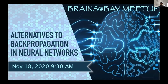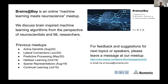Welcome everyone to another Brains at Bay. Today we'll be talking about alternatives to backpropagation in neural networks. Brains at Bay is an online machine learning meets neuroscience meetup where we discuss brain-inspired machine learning algorithms from the perspective of neuroscientists and machine learning researchers. We always try to have at least one neuroscientist and at least one machine learning researcher in every session, to juxtapose different points of view and have interesting discussions. Our goal is to bring the neuroscience world to the machine learning community.